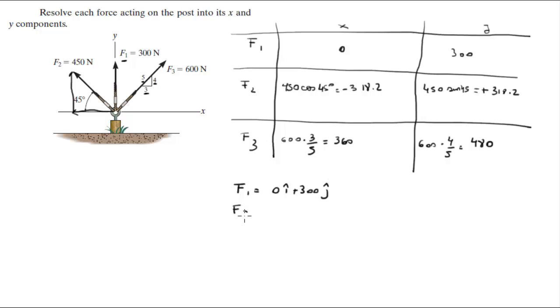F2 would be negative 318.2i plus 318.2j and F3 is 360i plus 480j. This is the Cartesian vector form.